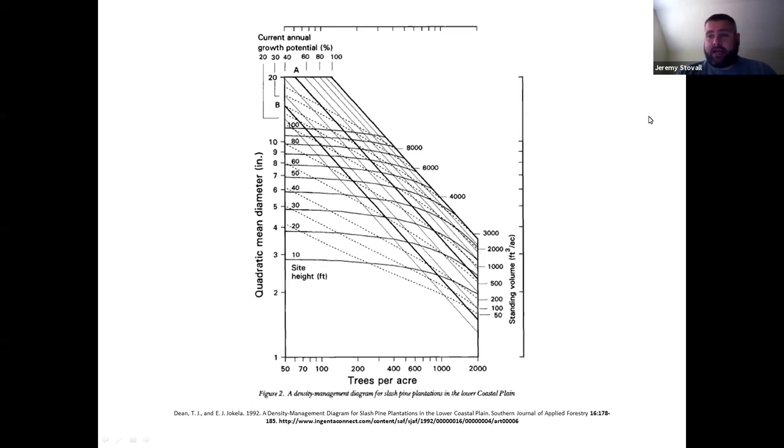Like Gingrich style stocking guides, you would need a different stand density management diagram for each region and for each species as their maximum possible SDI would vary based upon those factors. You can see there are a lot of lines on here. This is intended to do a lot of different things. We're going to use it in a more simple fashion today.